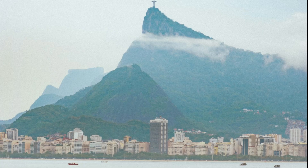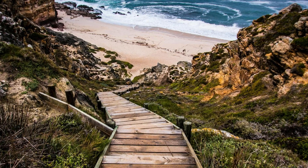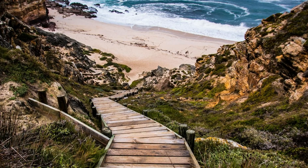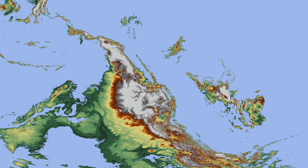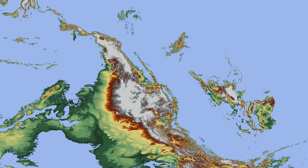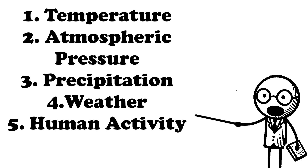Altitude refers to the height of an object or a point in relation to sea level or ground level, measured in meters or feet above mean sea level. Elevation is often used interchangeably with altitude when referring to the height of landforms. Altitude influences various environmental factors like temperature, pressure, and humidity. It plays a crucial role in determining climate zones, vegetation types, and animal life at different elevations. High altitude areas like mountains and plateaus contribute to the Earth's biodiversity and hydrological cycles.